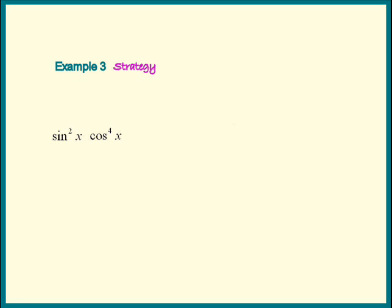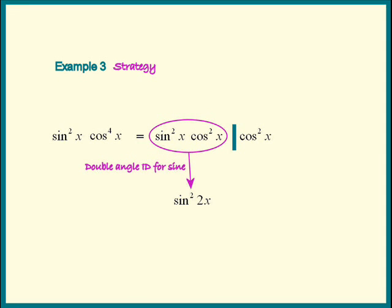Why? Because the cos fourth can be split into a cos squared times a cos squared. Once we do that, the sine double angle identity can be applied. The leftover cos squared x can be expressed in terms of cos 2x.